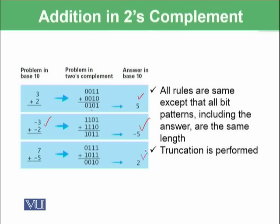All rules are same except that all bit patterns, including the answer, are the same length. Truncation is performed. If you find, for example, when you add minus 3 and minus 2, you might have noticed that these are 3 ones, so it will become 11. This 1 will be truncated.